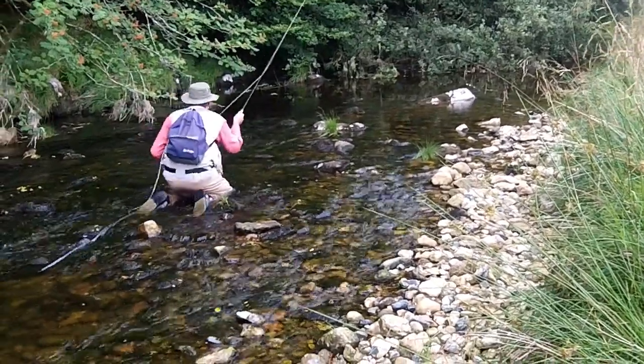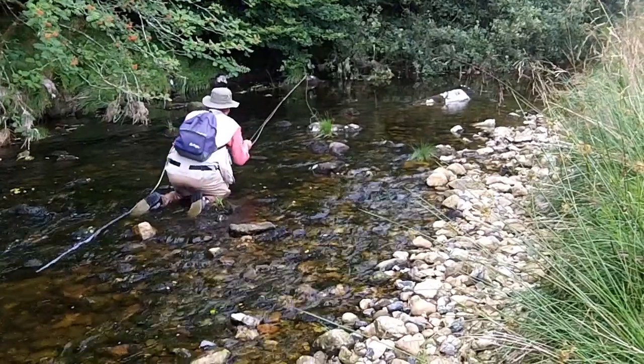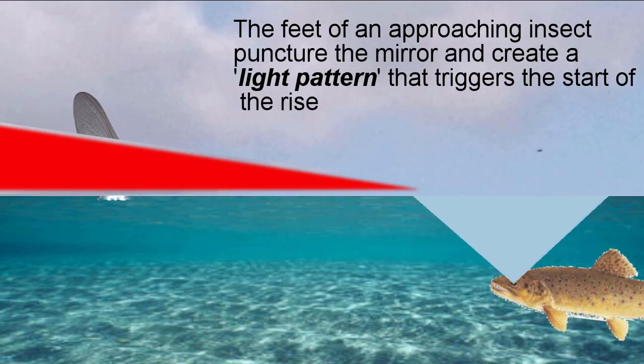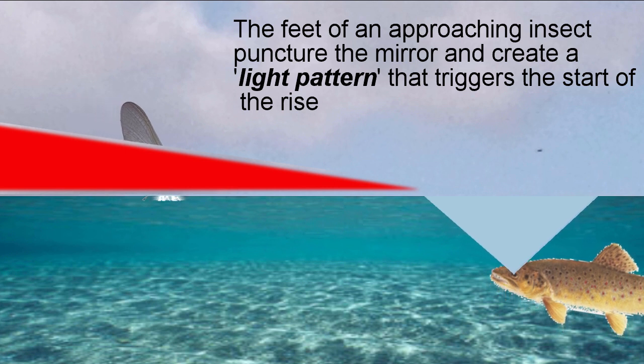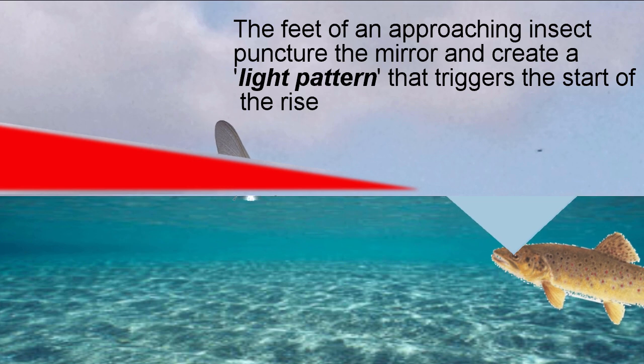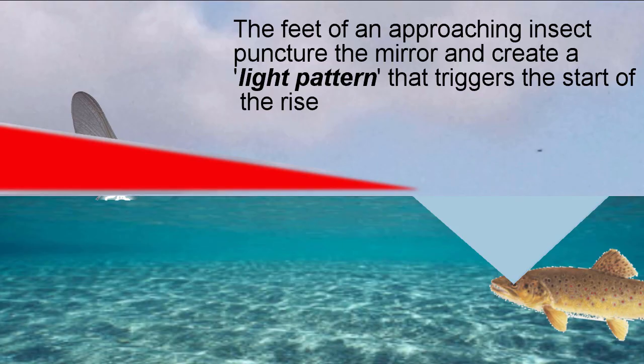This is why we adopt a stealthy approach when casting to a rising trout. We often judge where to cast our fly by noting where a trout rises to take a natural fly. But there is a flaw in this approach which has been explained by Vince Marinaro. It turns out that trout get advanced warning of a fly long before it appears in their window.